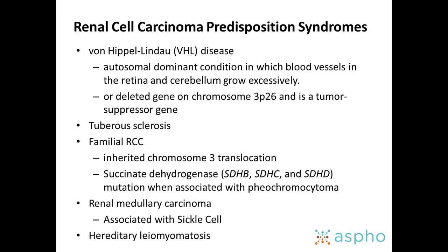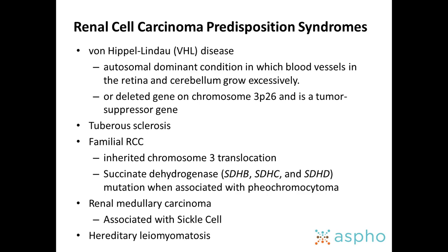For renal cell carcinoma, there are also germline predisposing syndromes — the most common being von Hippel-Lindau disease and tuberous sclerosis. These are likely to appear on the boards and would be good to remember.